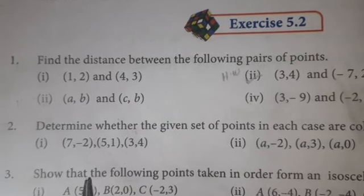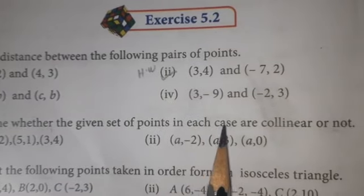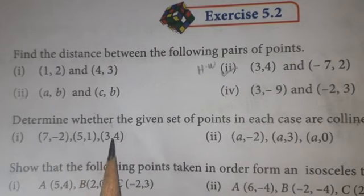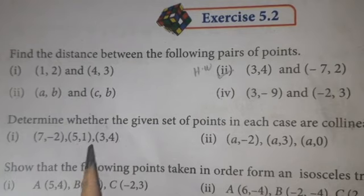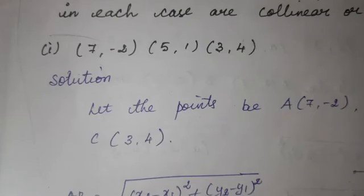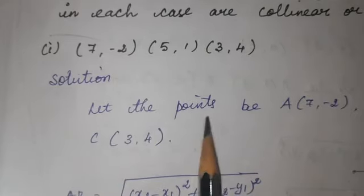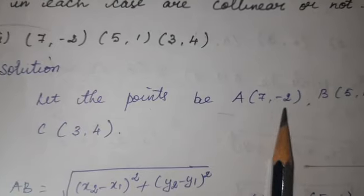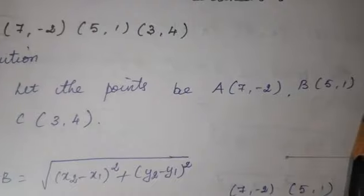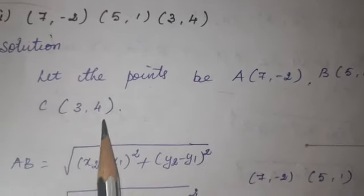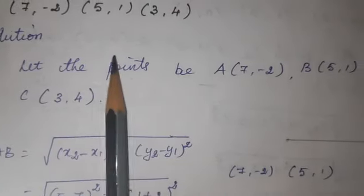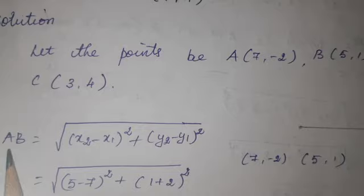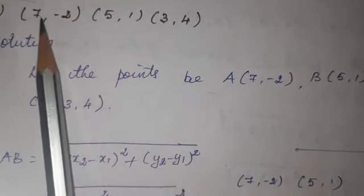Second question: determine whether the given set of points are collinear or not. The first set: (7, -2), (5, 1), (3, 4) — three points are given. Solution: let A = (7, -2), B = (5, 1), C = (3, 4). We need to find the distances AB, BC, and CA to check for collinearity.